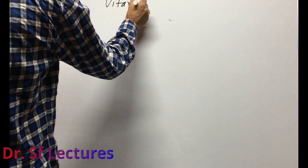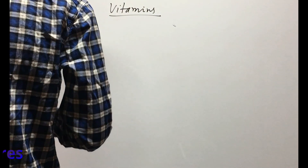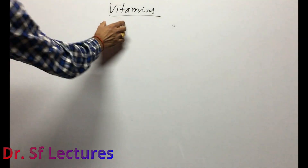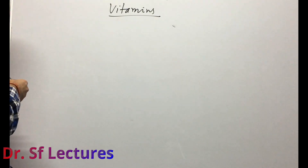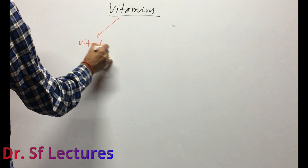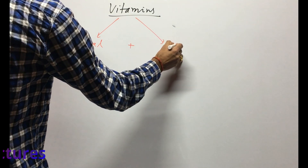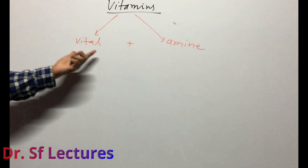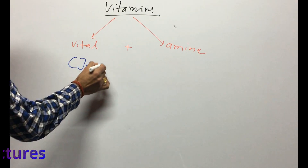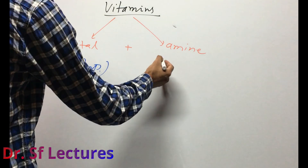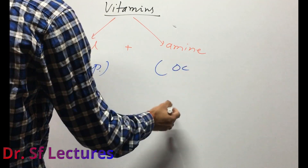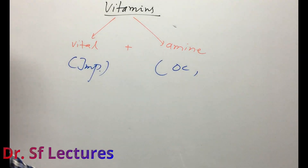Today we are going to talk about vitamins. The word 'vitamin' is made from two words: vital plus amines. 'Vital' means important, and 'amine' means organic compound — an organic compound that was essential for our life.